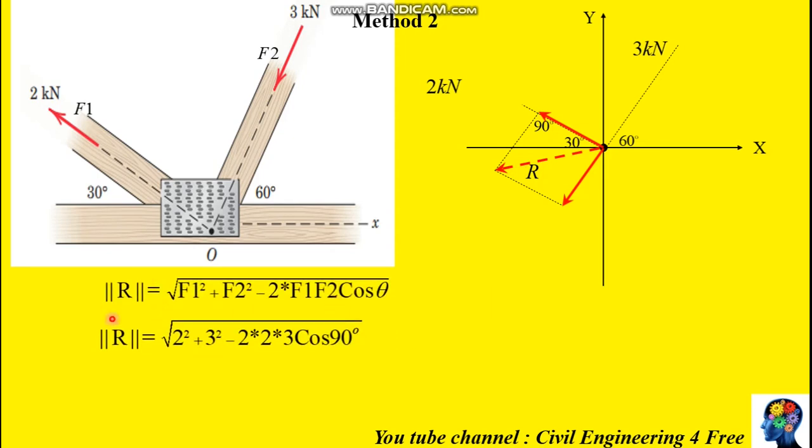Using cosine law, the resultant will be square root of F1 squared plus F2 squared minus 2 times F1 F2 cosine of the angle between them. Since we know the magnitude of these two forces, 2 squared plus 3 squared minus 2 times 2 times 3 cosine of 90 degrees. You know that cosine of 90 degrees is zero, so it will be reduced to square root of 13, which will give us 3.61 kilonewton.